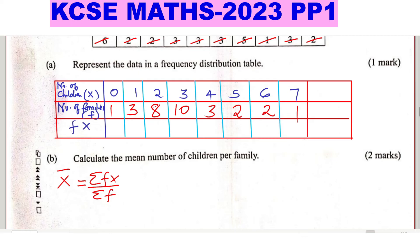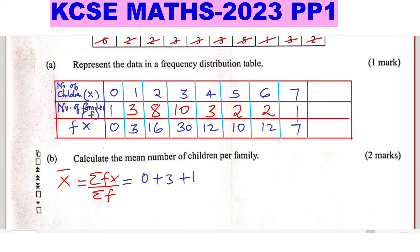Multiplying x by f for each row: 0×1=0, 1×3=3, 2×8=16, 3×10=30, 4×3=12, 5×2=10, 6×2=12, 7×1=7. The summation of fx is 0+3+16+30+12+10+12+7.